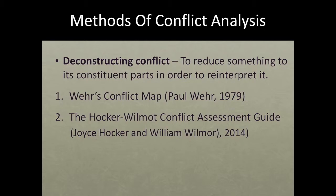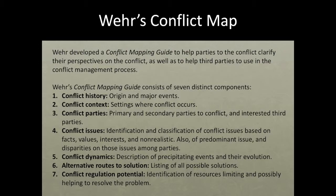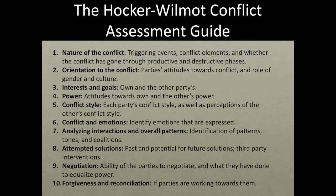Let's talk about methods of conflict analysis — two types. The book discusses Weir's Conflict Map, developed by Paul Weir in 1979, and more recently the Hocker-Wilmott Conflict Assessment Guide from Joyce Hocker and William Wilmot, 2014 — a little more current, and that's the one we'll focus on more. Weir's Conflict Map starts with history and moves all the way through to how you manage a result — resolution or ongoing management — with all the details in the middle. Weir's has seven steps; the Hocker-Wilmott guide has ten steps, which I'll walk you through.